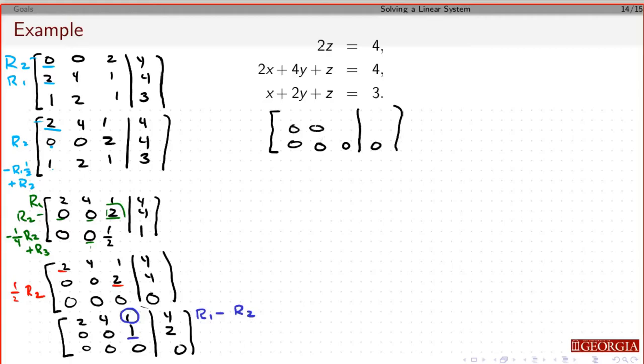I'm going to leave the second row alone. Now I'm going to take 2 minus 0 is 2. 4 minus 0 is 4. 1 minus 1 is 0. 4 minus 2 is 2.